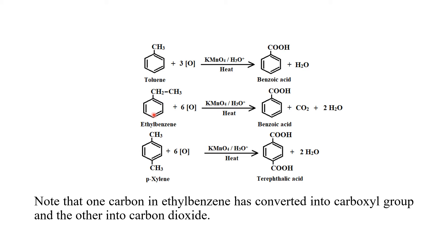दूसरी case में side chain में दो carbon atoms हैं - एक carbon carboxyl group में change होगा, दूसरा carbon dioxide में। तीसरे वाले case में we have para-xylene because two methyl groups are attached at para position. Under these conditions it will oxidize so as to give two carboxyl groups, that is terephthalic acid।